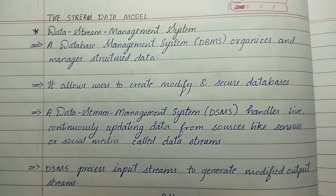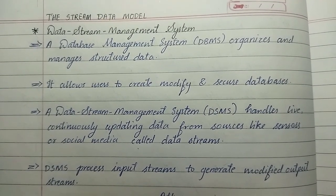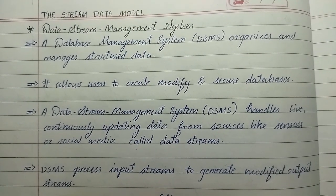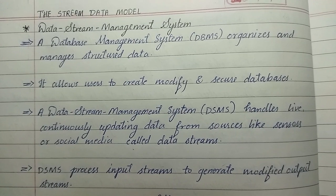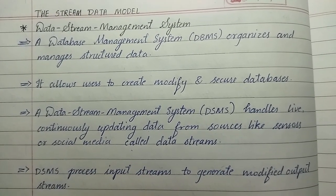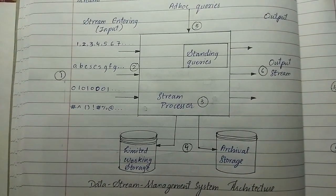Whereas a data stream management system, DSMS, handles live continuously updating data from sources like sensors or social media called data streams. DSMS process input streams to generate modified output streams. This is the diagram for the data stream management system architecture.